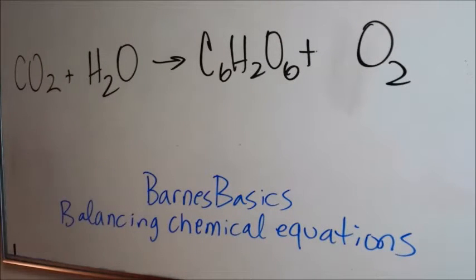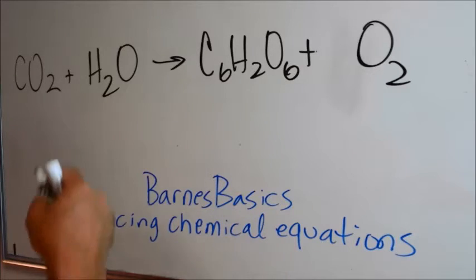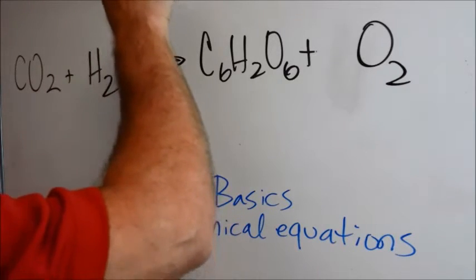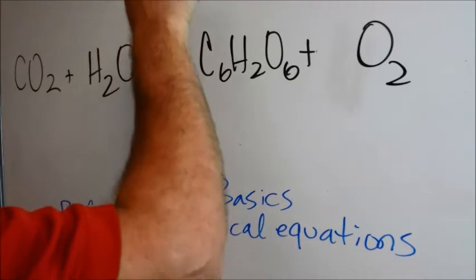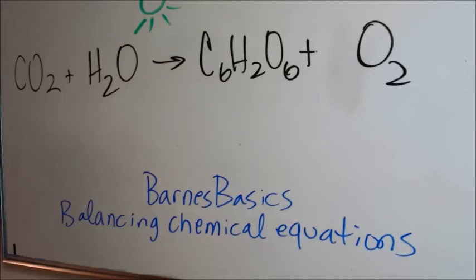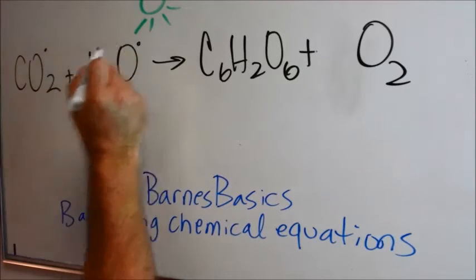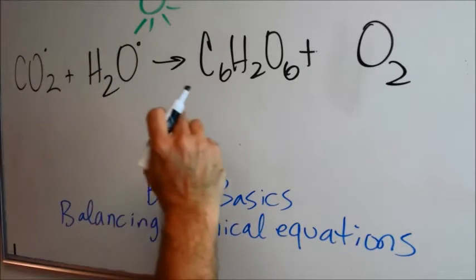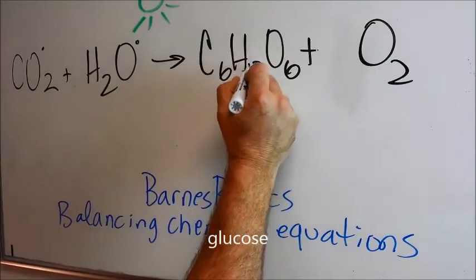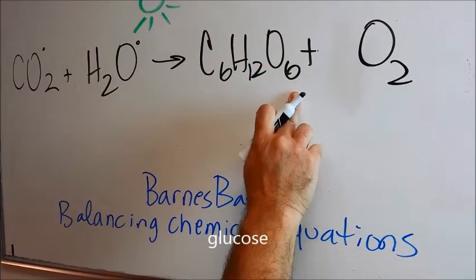Welcome back to Barnes Basics Balancing Chemical Equations. In this equation I would like to look at photosynthesis. I am a biologist, and so I like to think about what happens when the sun shines on things and all the benefits that we get from plants. So in this formula, carbon dioxide, which we know is neutral, and water react to form sugar, C6H12O6.